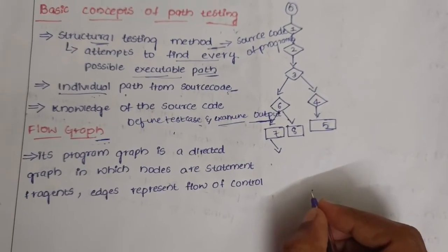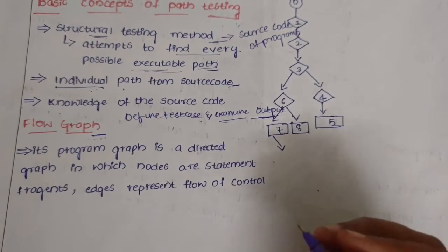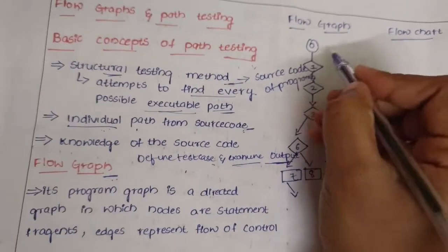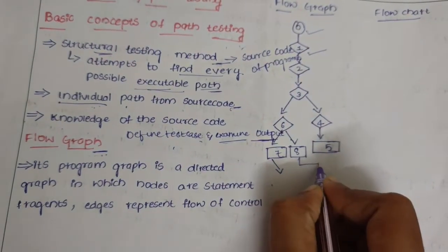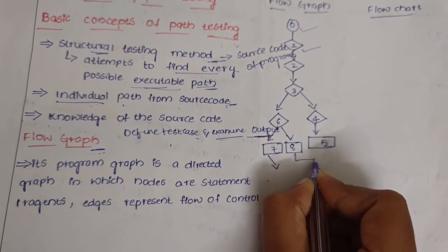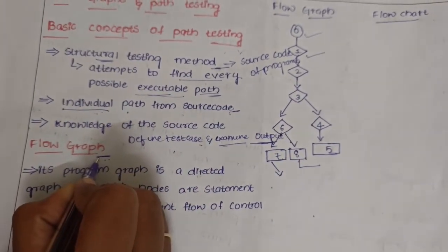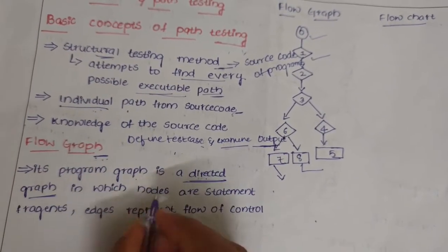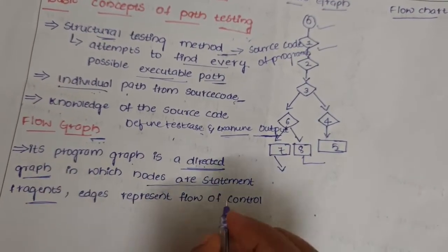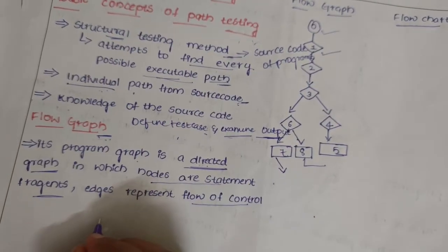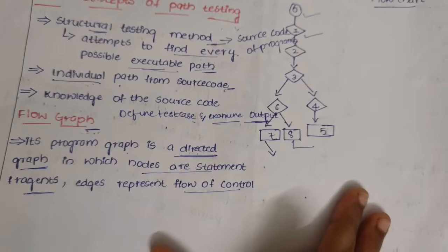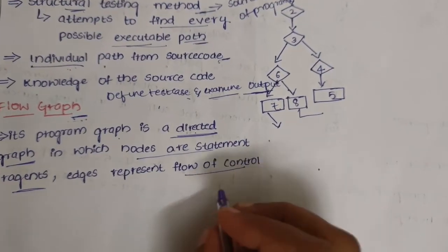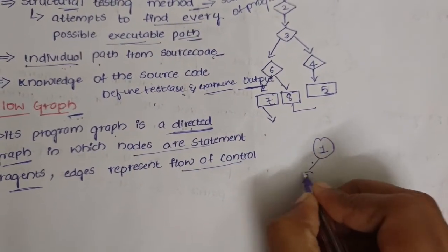The flow graph is a sequence of steps followed by a program. Unlike a flowchart which uses circles, diamonds, and rectangular boxes, the flow graph — also called a program graph — is a directed graph in which nodes are statement fragments and edges represent flow of control. Hence it is also known as a control flow graph. Every statement is represented in the form of circles.